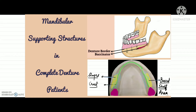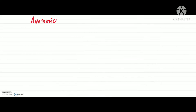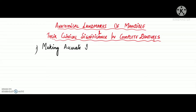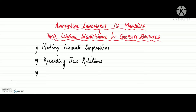As we already know, for treating a completely dentureless patient, thorough knowledge and understanding of anatomic landmarks is really necessary for making accurate impressions, recording jaw relations, and even adjustment of dentures. In fact, in almost every phase of dentistry, knowledge of anatomic landmarks is required.